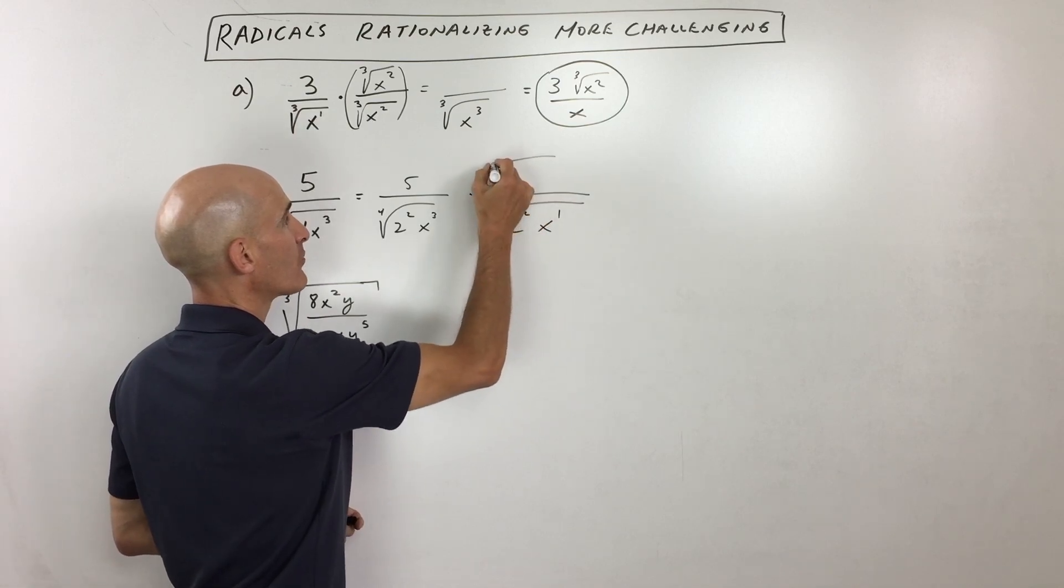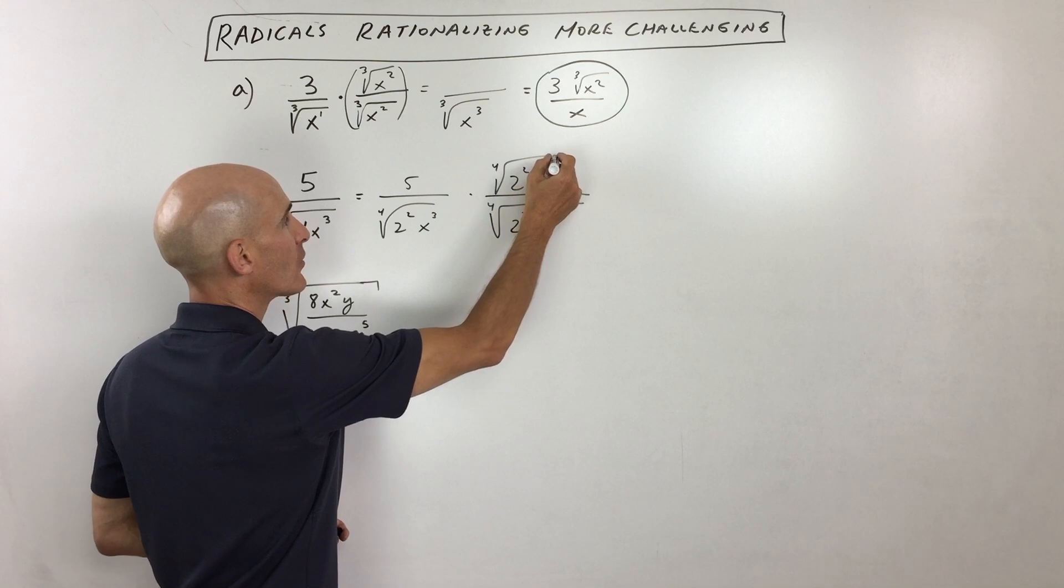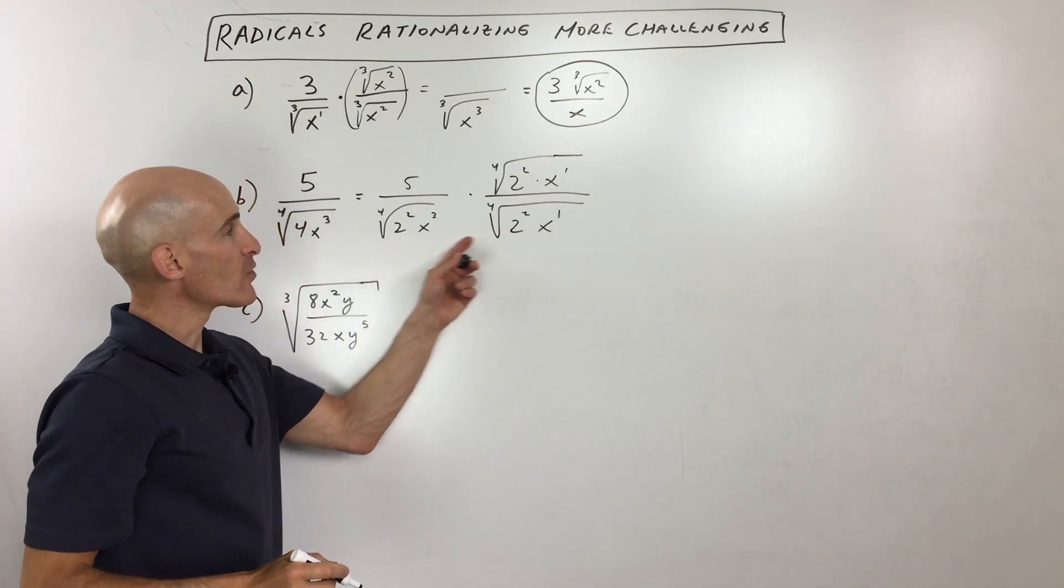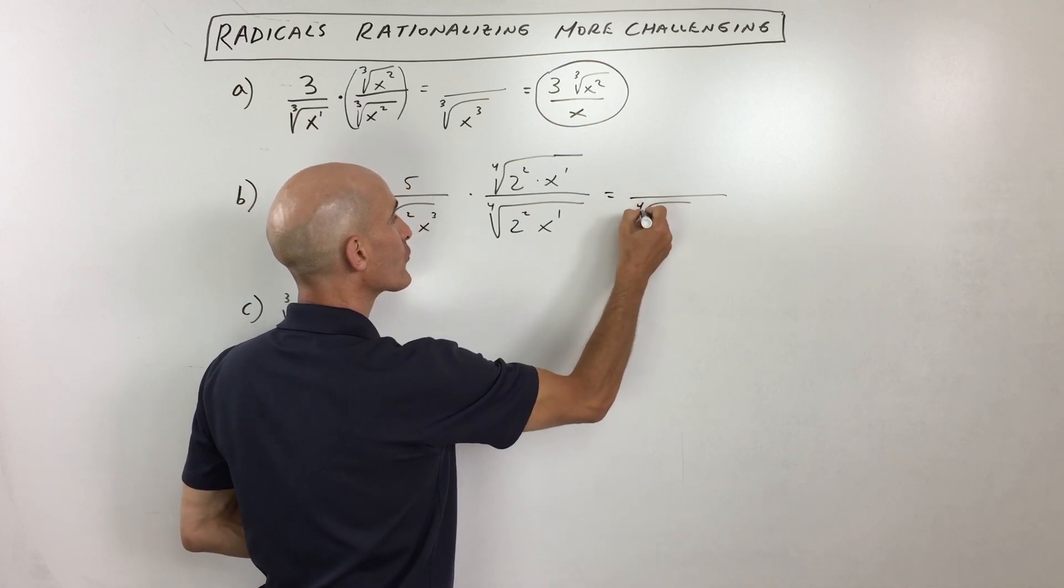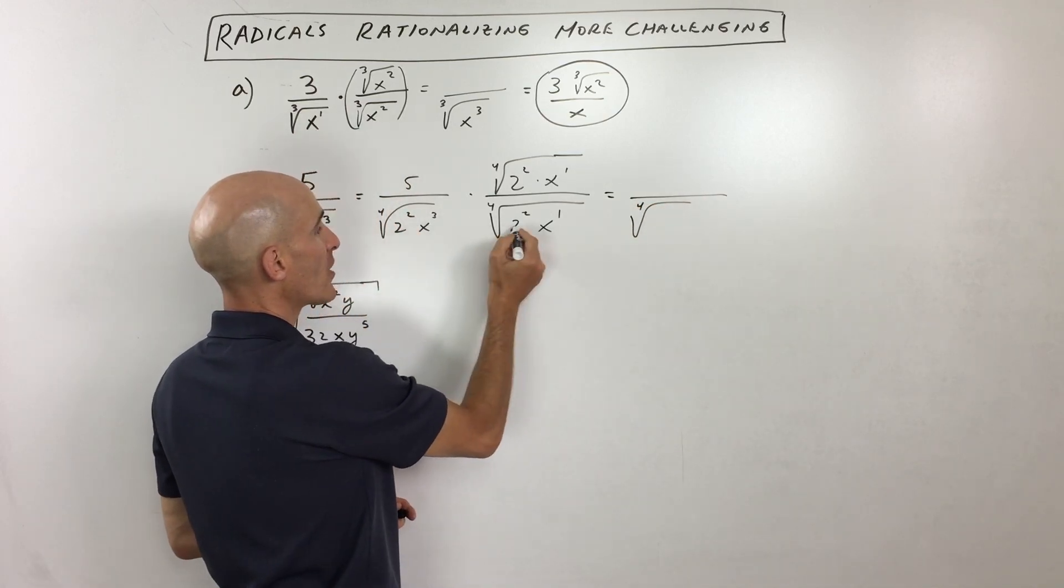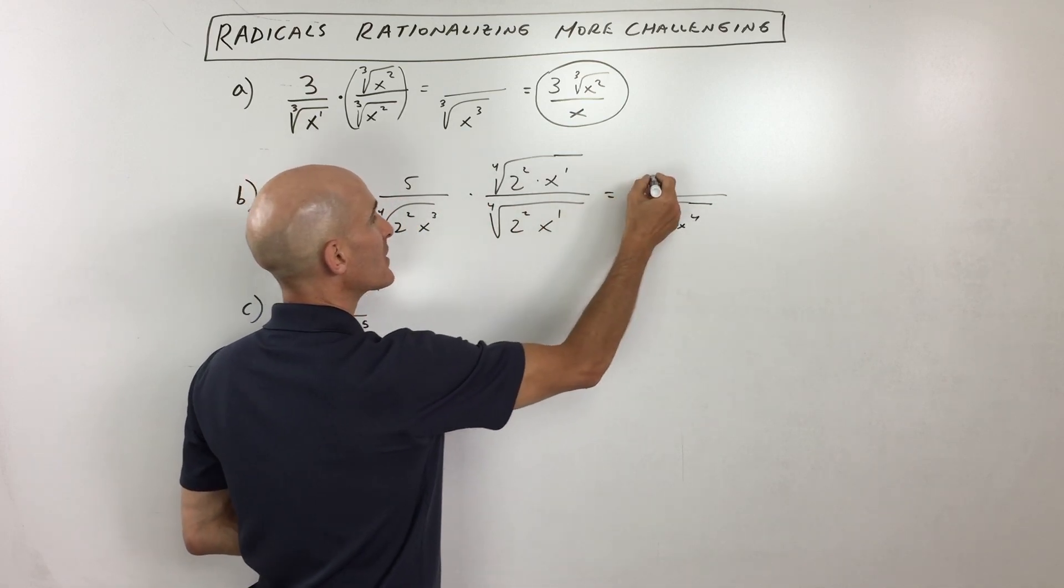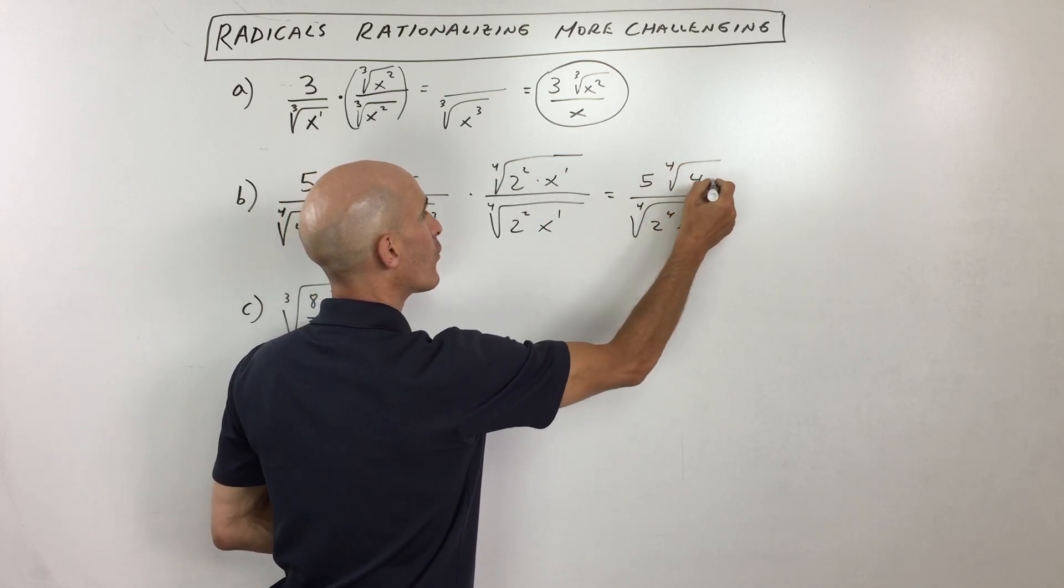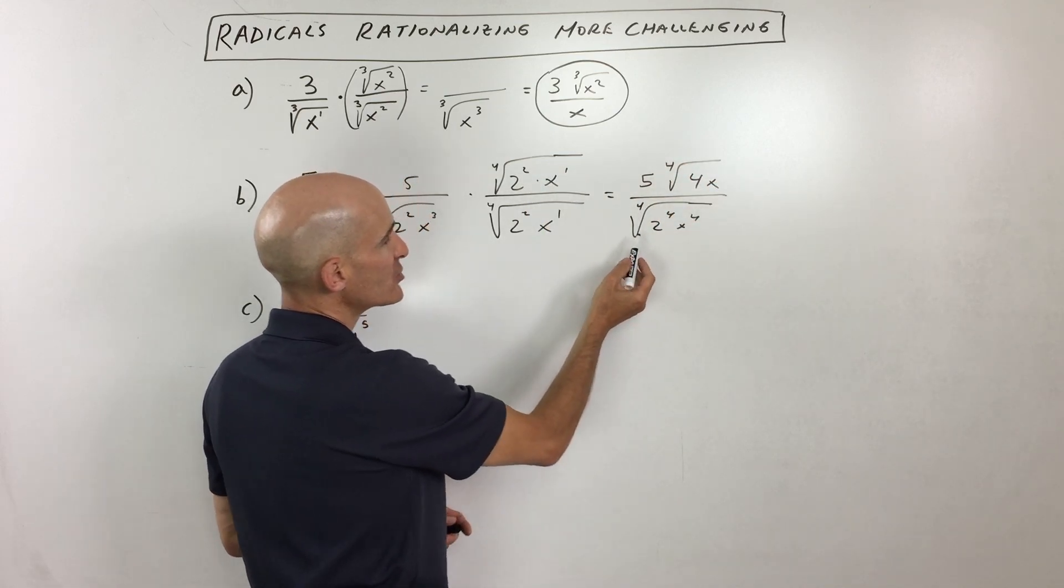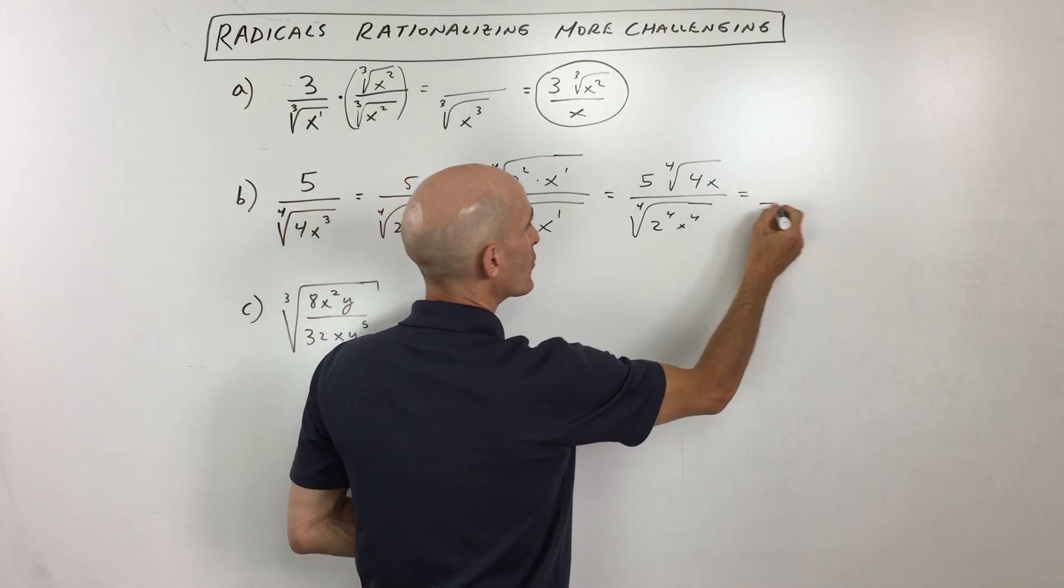So that's what I'm going to multiply by. I'm going to multiply the same thing, numerator and denominator, by that same quantity. So if we were to multiply across, what we're getting is the fourth root of 2 squared times 2 squared is 2 to the 4th, x to the 4th, and the numerator we're getting 5, 4th root of, let's see, 2 squared is 4x, and then here what you can see is the fourth root and the fourth power, these are canceling one another out.